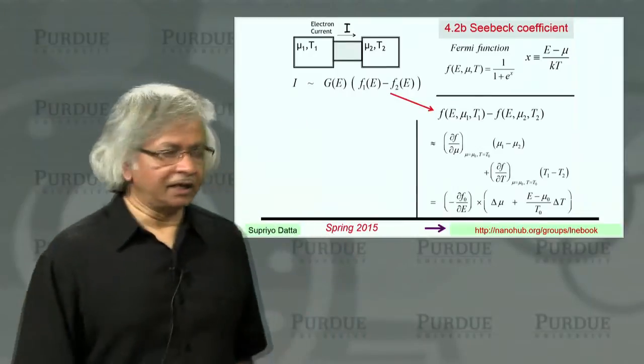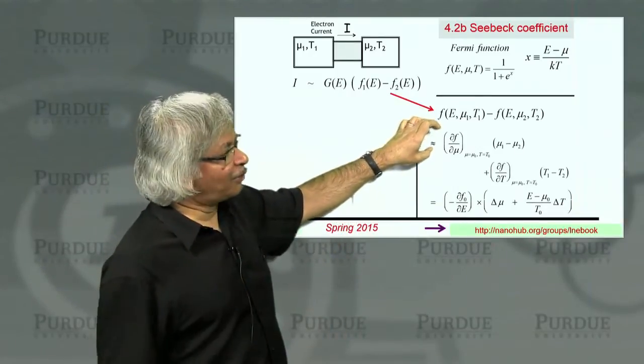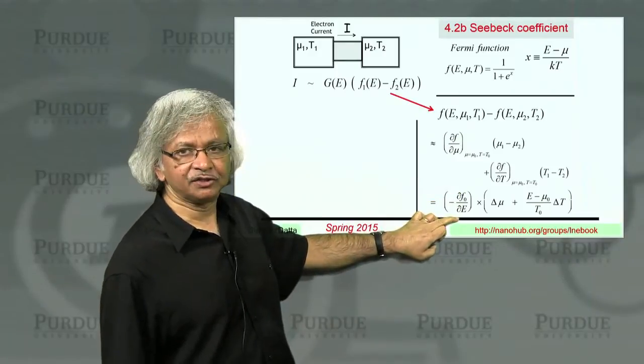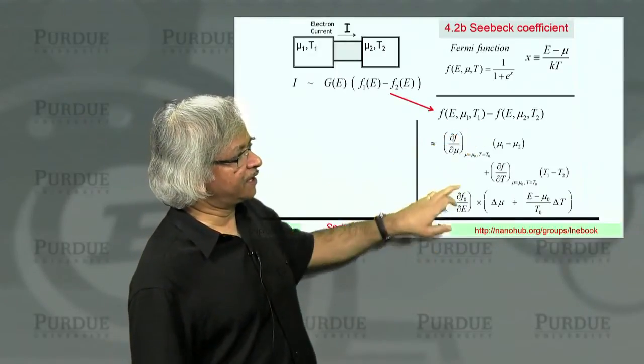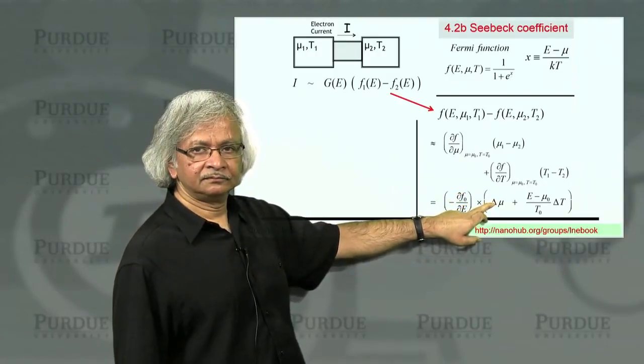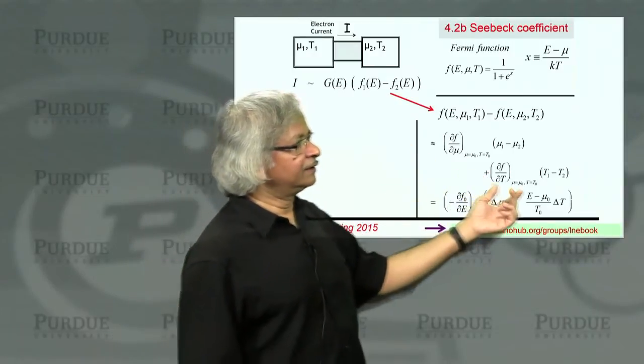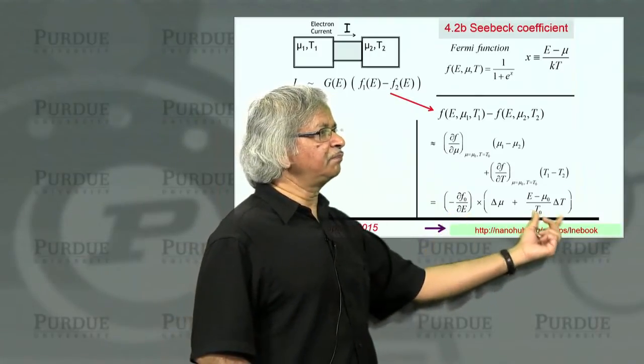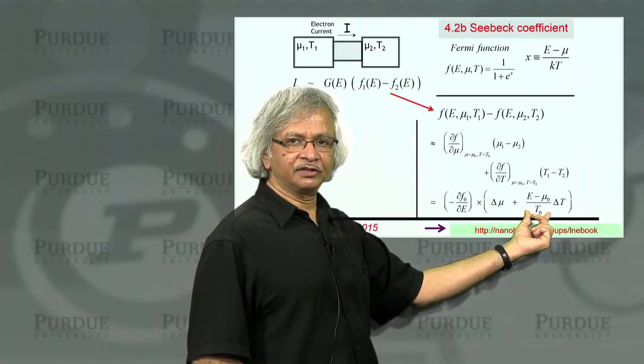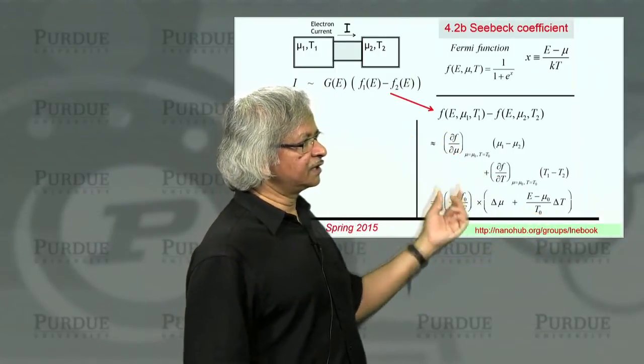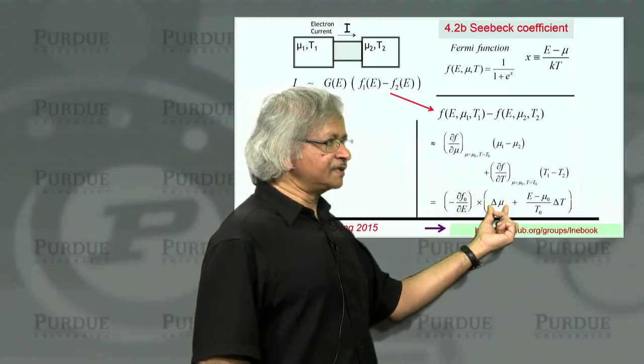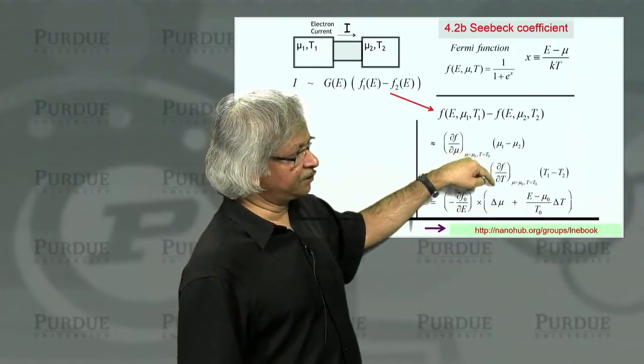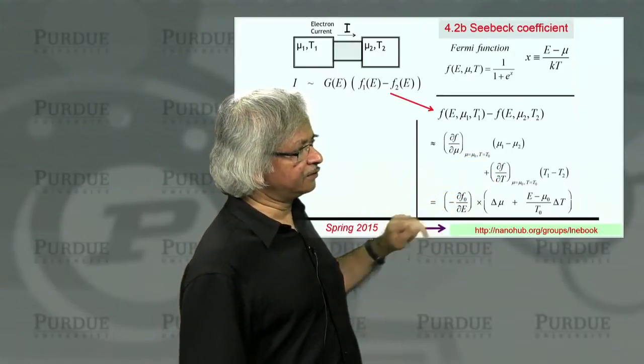And what you can show, and I'll show this in a minute, back in Unit 1, what we had shown is that the derivative with respect to mu is the negative of the derivative with respect to energy. And so that first term had become minus dF dE times delta mu. What we'll now show is the dF dT can also be written in terms of the derivative with respect to energy, but you pick up an extra factor of E minus mu over T. So finally, what you have is these two terms can be written as this dF dE times this delta mu plus this factor times delta T.